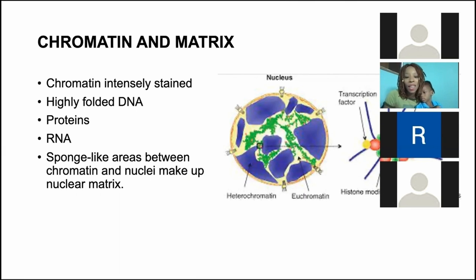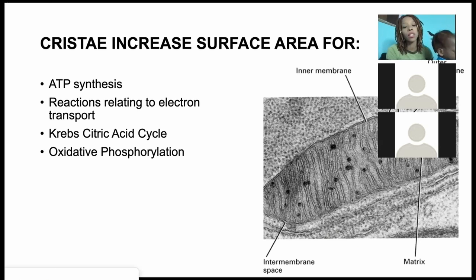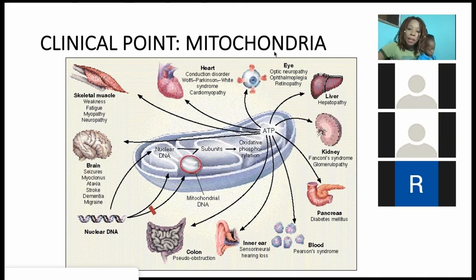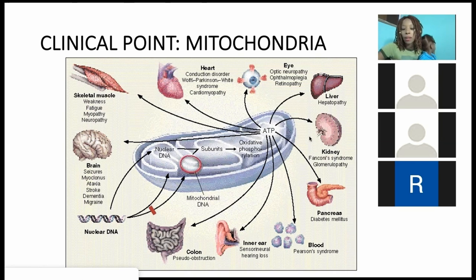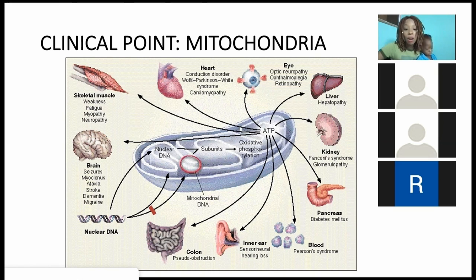We have a slight idea of the structure and function of the mitochondria. What's important to retain is ATP, the Krebs cycle, and oxidative phosphorylation. The clinical point as it relates to mitochondria: different functions of the mitochondria can be affected and result in certain diseases. Impairment in ATP synthesis can cause optic neuropathy, ophthalmoplegia — problems with the eye — as well as problems with the liver, kidney, Fanconi syndrome, and problems with the pancreas and bloodstream. Even disruption of mitochondrial DNA can cause skeletal muscle diseases — myopathies — that result from disruption of the mitochondrial DNA.